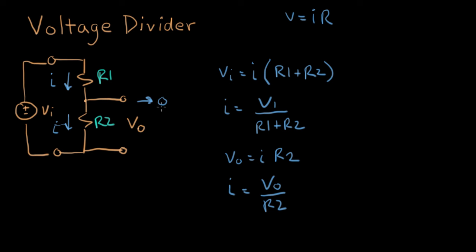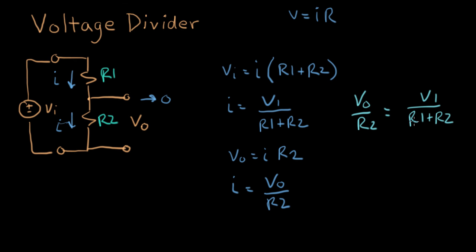And now we have two expressions for I. And our circuit, because we made this assumption of zero current going out, those two I's are the same. So let's set those equal to each other and see what we get. I is V zero over R2 equals V1 over R1 plus R2. So now I'm going to take R2 and move it over to the other side of the equation. And we get V out equals V in times R2 over R1 plus R2.